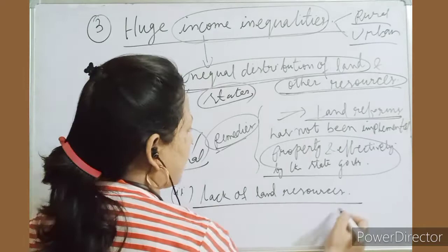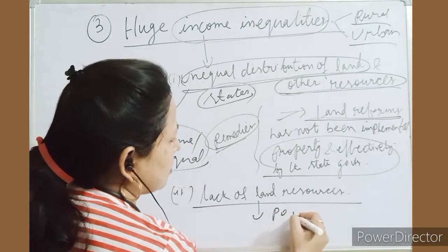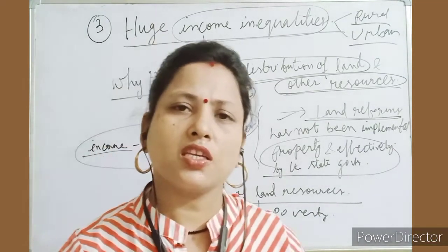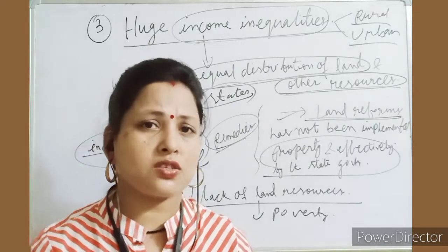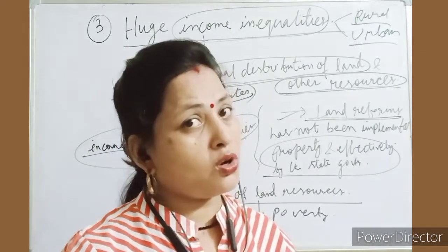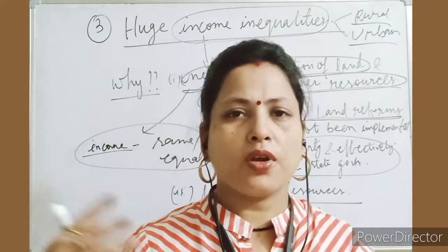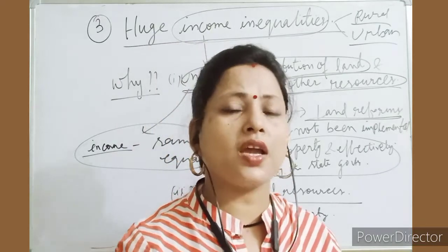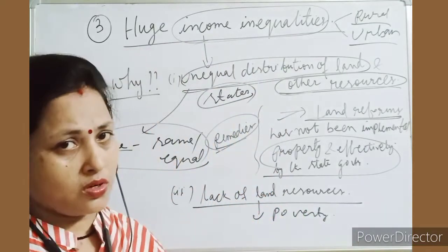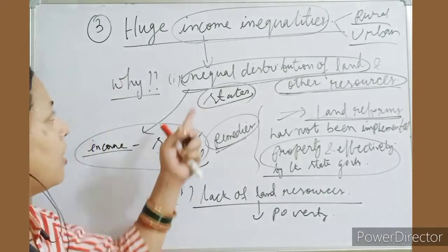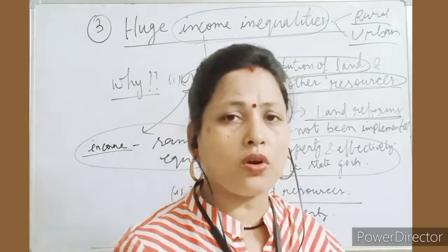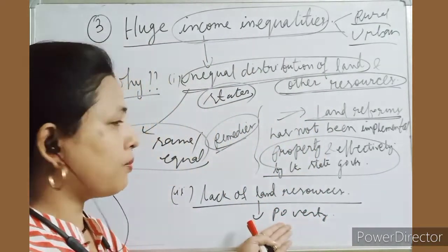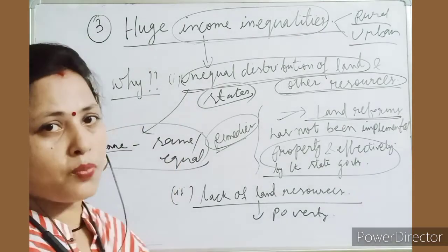The lack of land resources also leads to poverty. In the urban case, someone may have a good degree but is unable to get the proper job, so they cannot earn a proper income or manage their family's needs. That is why income inequality plays a major role in causing poverty. It is the third important cause.